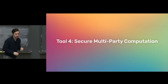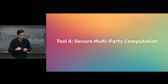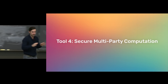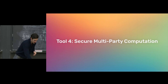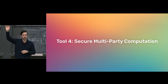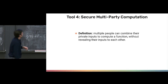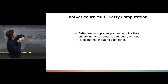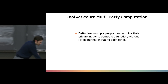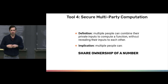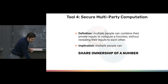This brings me to my absolute favorite tool: secure multi-party computation. Most machine learning people have not heard about this yet, and this is the coolest thing I've learned about since learning about AI and machine learning. Related to this is encrypted computation — homomorphic encryption, anyone? The textbook definition: secure MPC allows multiple people to combine their private inputs to compute a function without revealing their inputs to each other. But in the context of machine learning, the implication is that multiple different individuals can share ownership of a number.